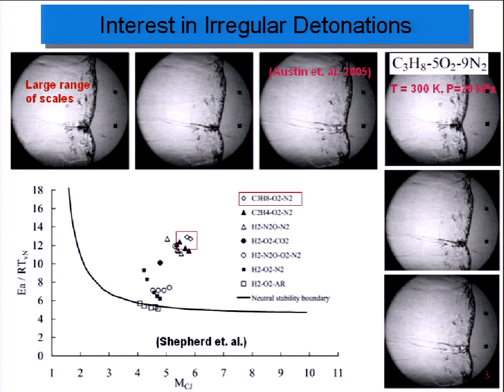A lot of work has been done on regular detonations. These are detonations of hydrogen, oxygen, argon, and other more stable molecules. Shown here is a plot of the stability of a detonation. With more stability, the detonation is less complex and easier to understand. Up here is what I study: propane, which is the most unstable detonation that has been studied in experiments.